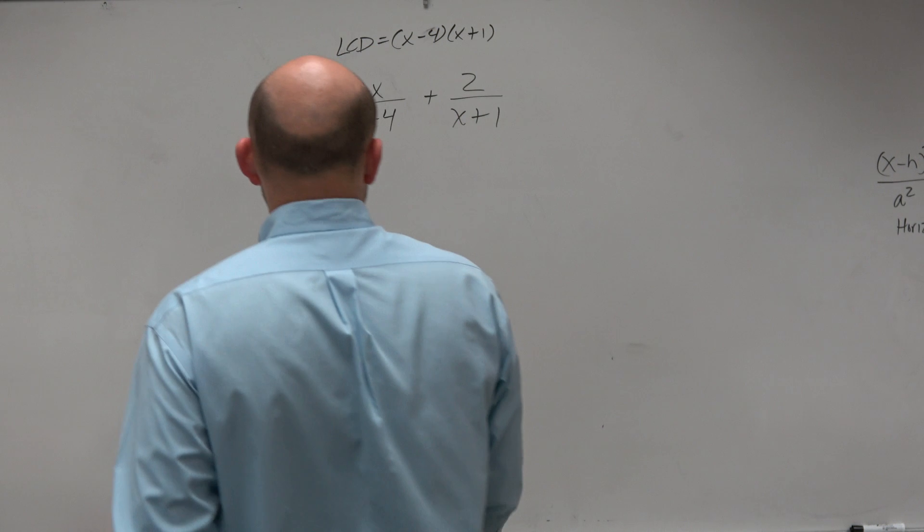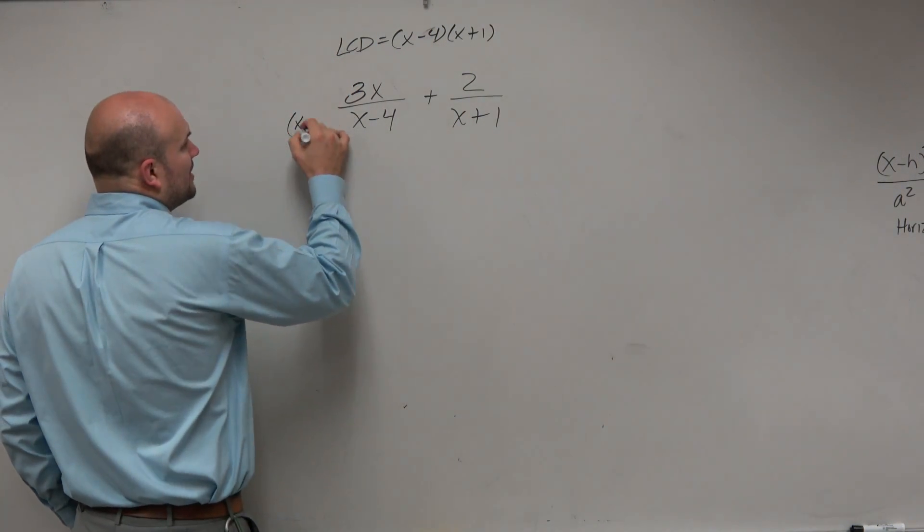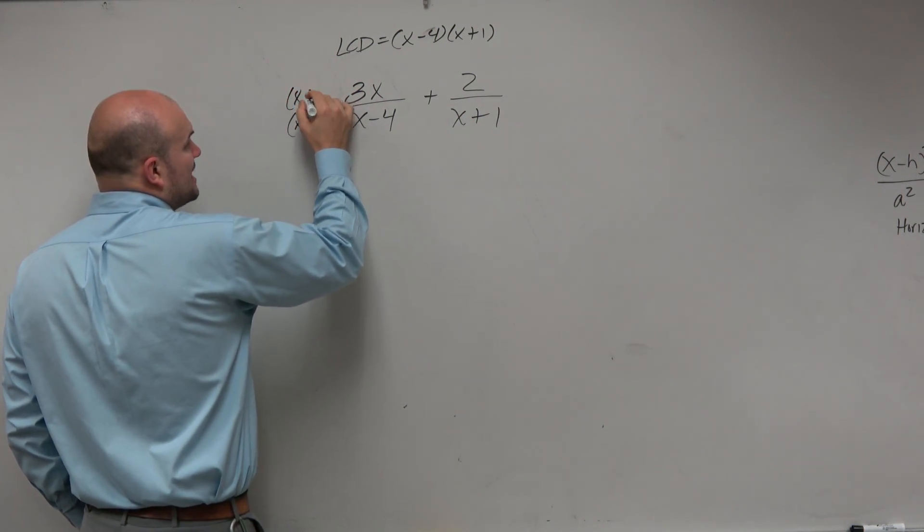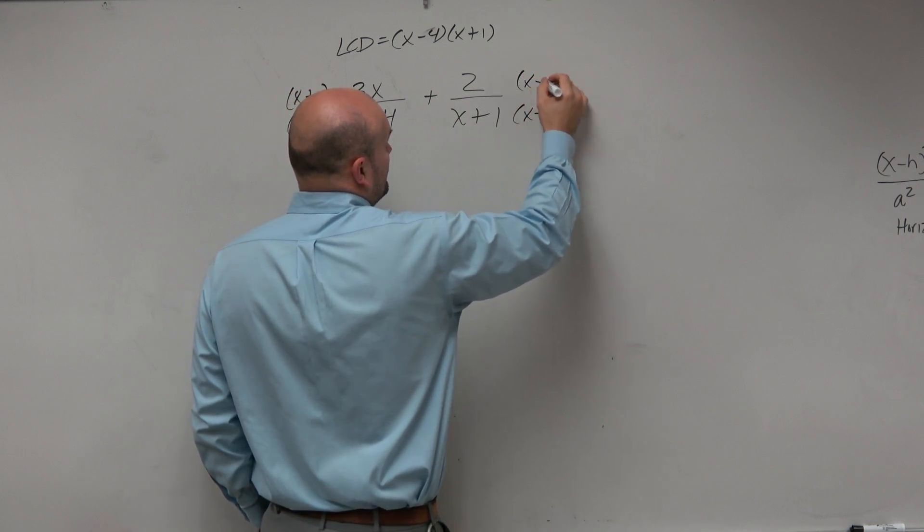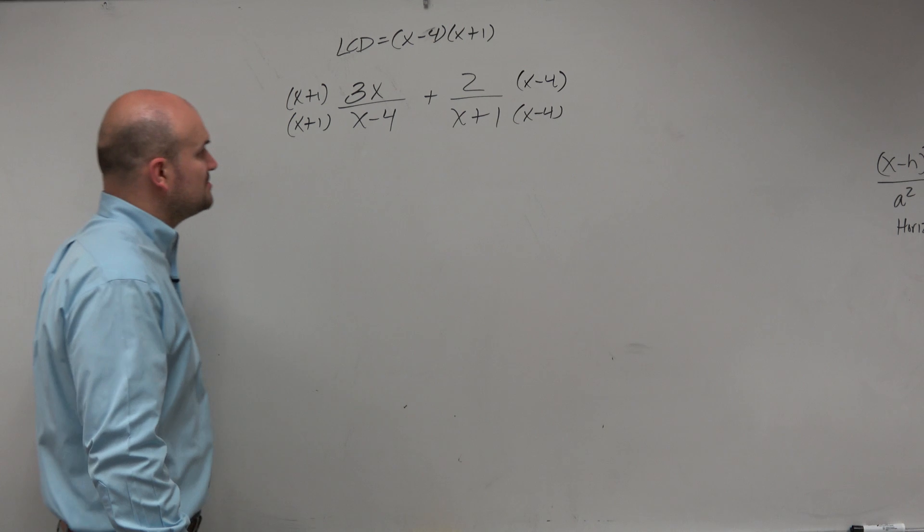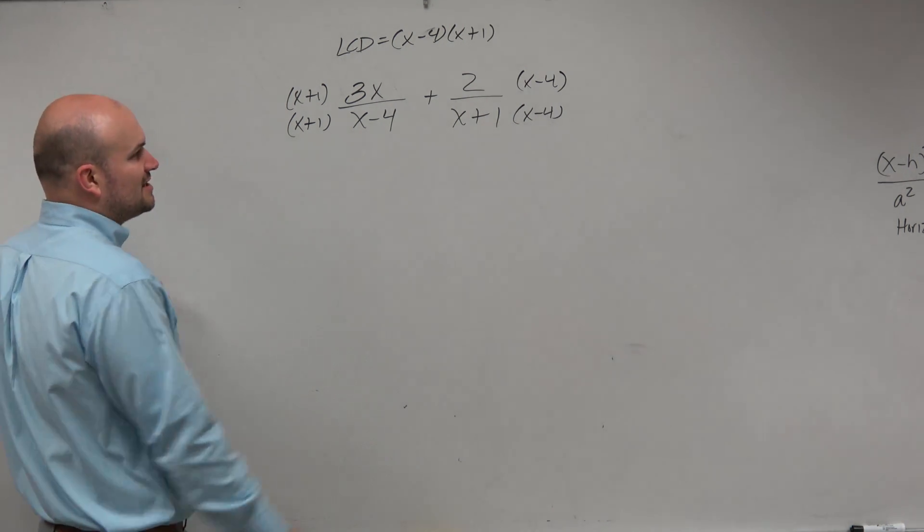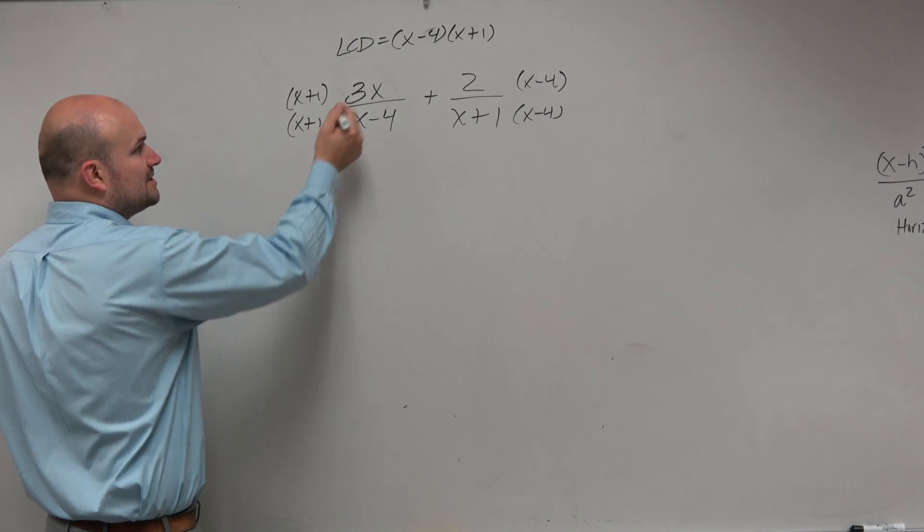Remember, you have to multiply on the top and the bottom to produce equivalent fractions. Some students would just multiply by a number to eliminate the fraction, but in this case, we've got to get common denominators.